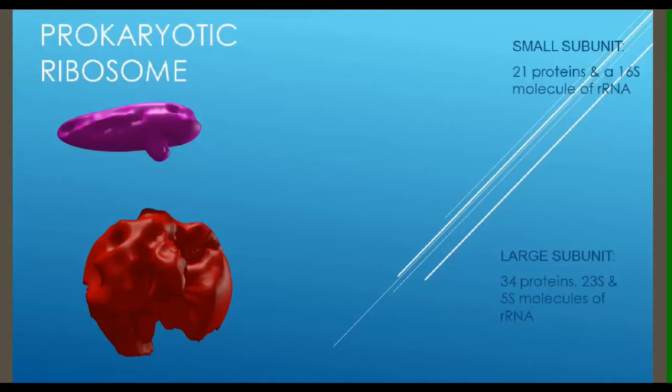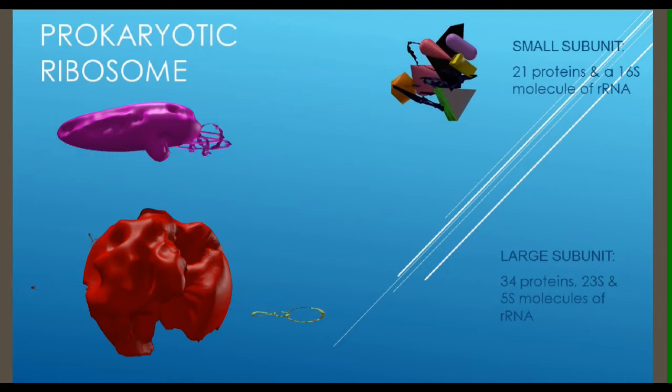The prokaryotic ribosome is composed of two subunits. The smaller 30S subunit is composed of 21 proteins and a 16S molecule of rRNA. S is a Svedberg unit, measuring the density after ultracentrifugation.